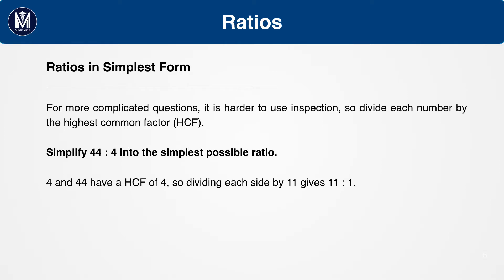For example, simplify 44 divided by 4 into the simplest possible ratio. 4 and 44 have a highest common factor of 4, so dividing each side by 11 gives us 11 to 1.